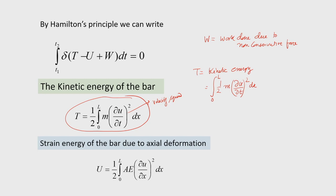Strain energy of the bar due to axial deformation: since the bar is constrained at one end or both ends, strain is produced and energy is stored due to straining of the bar. This strain energy is: U = (1/2)·∫₀ᴸ AE·(∂u/∂x)²·dx.